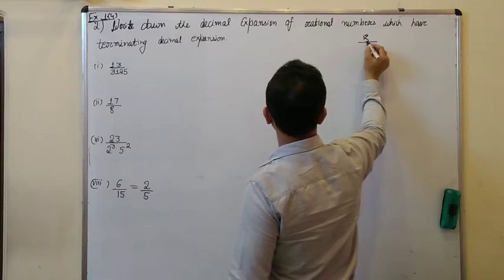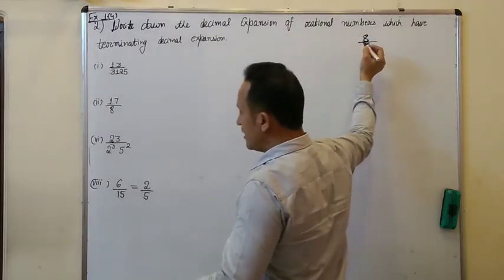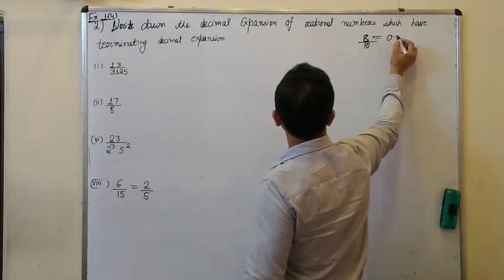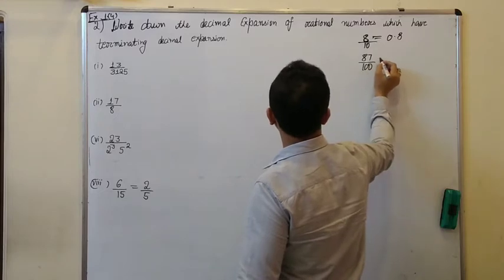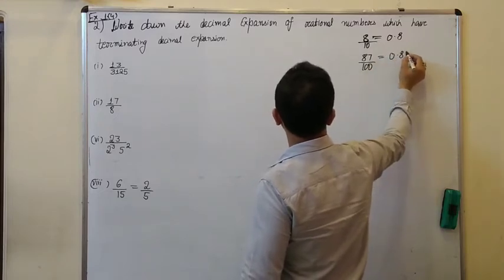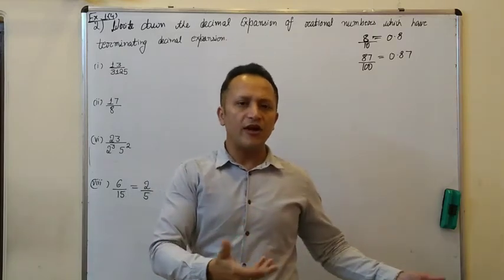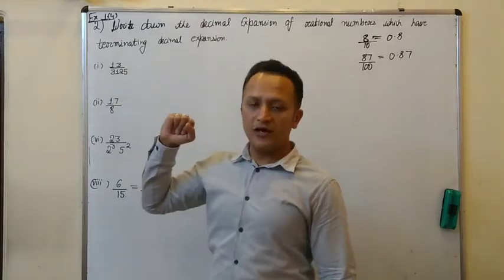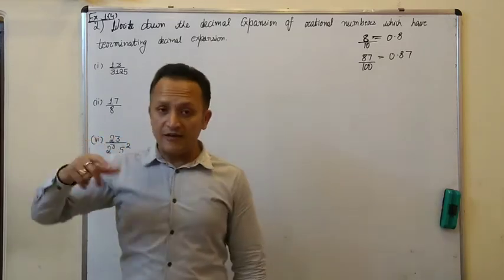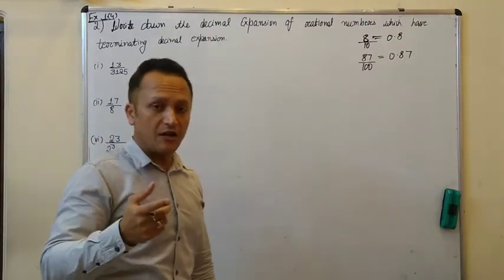If I give you a number 8 by 10, you don't need to divide the number. Aakko pata hai it can be written as 0.8. Similarly, if I write down 87 by 100, without actual division you can directly write it as 0.87. So the same concept follows here — without actually dividing, but you have to confirm whether it is the terminating one.